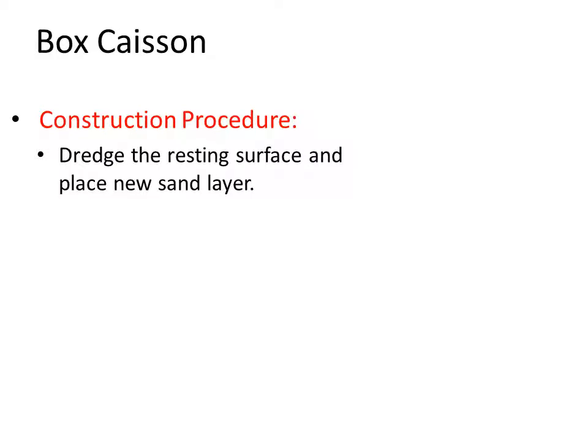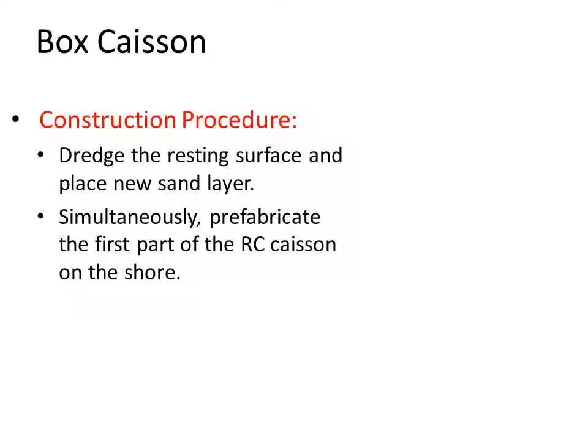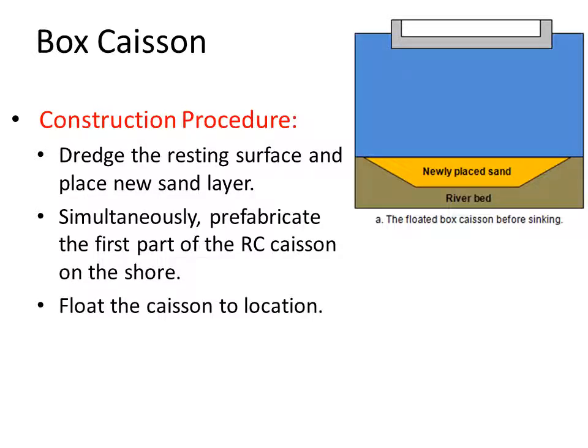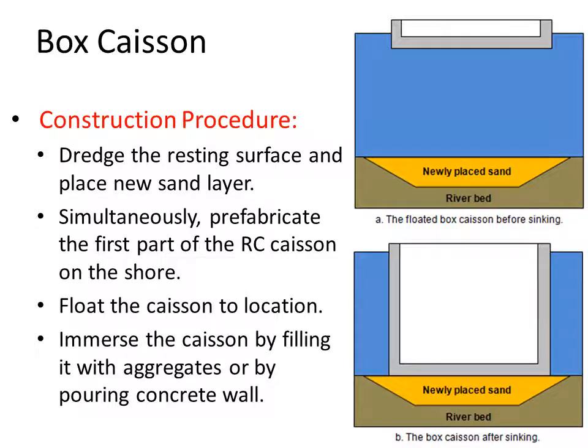The construction procedure for a box caisson begins with pre-dredging the seabed or riverbed to place a new sand layer to achieve sufficient bearing capacity. Simultaneously, the first part of the RC caisson is prefabricated on shore, then floated to the location where it will rest. Using mostly slip forms, it is then immersed to rest on the base layer.